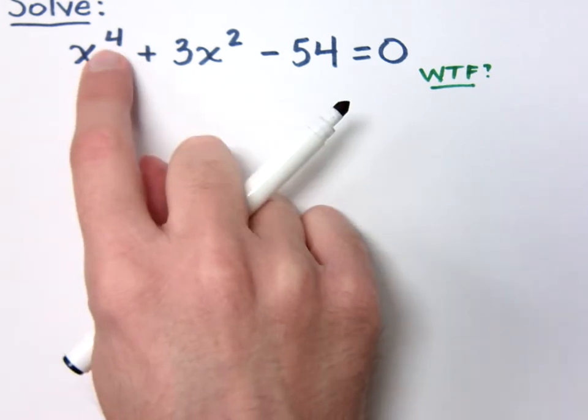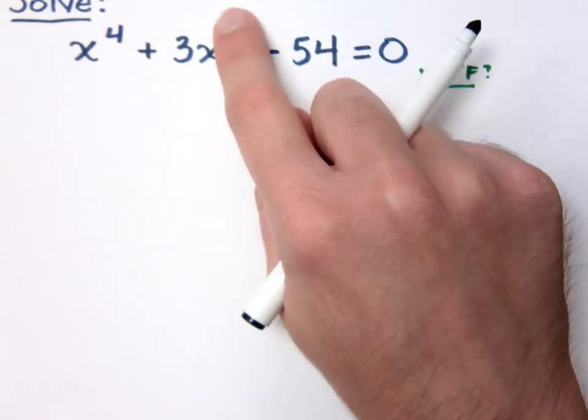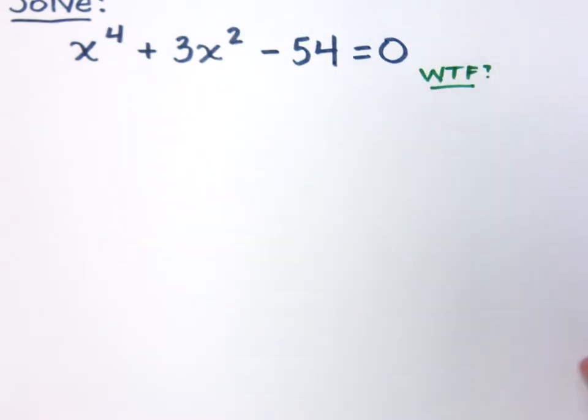If this were just x squared, and this was just x, I could factor that, right? Now, how would you break down, if it were x squared, how do you break down x squared? You break it up evenly to be x and x, right?